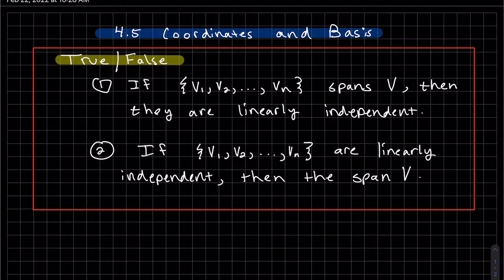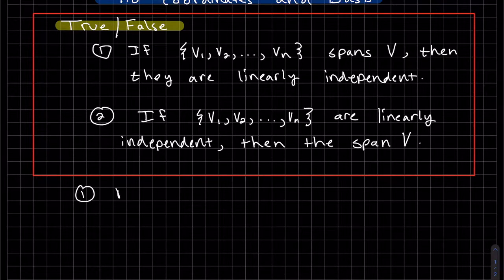Okay, so our first one: if we have a set that spans V, then they are linearly independent. Is that true or false? It's going to be false, and I'll give you a counter example to explain.